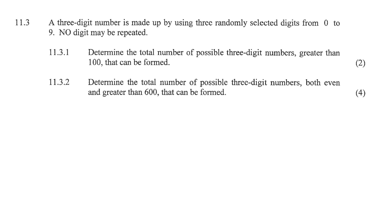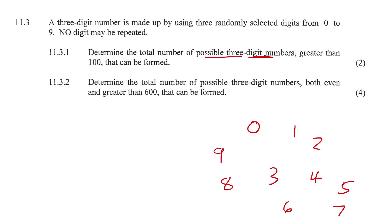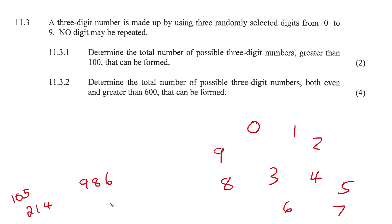A three-digit number is made up by using three randomly selected digits from zero to nine - no digit may be repeated. The first question says: determine the total number of three-digit numbers greater than 100. Think about this - we could make numbers like 105 or 986, but you can't start with a zero because that would make the number less than 100.